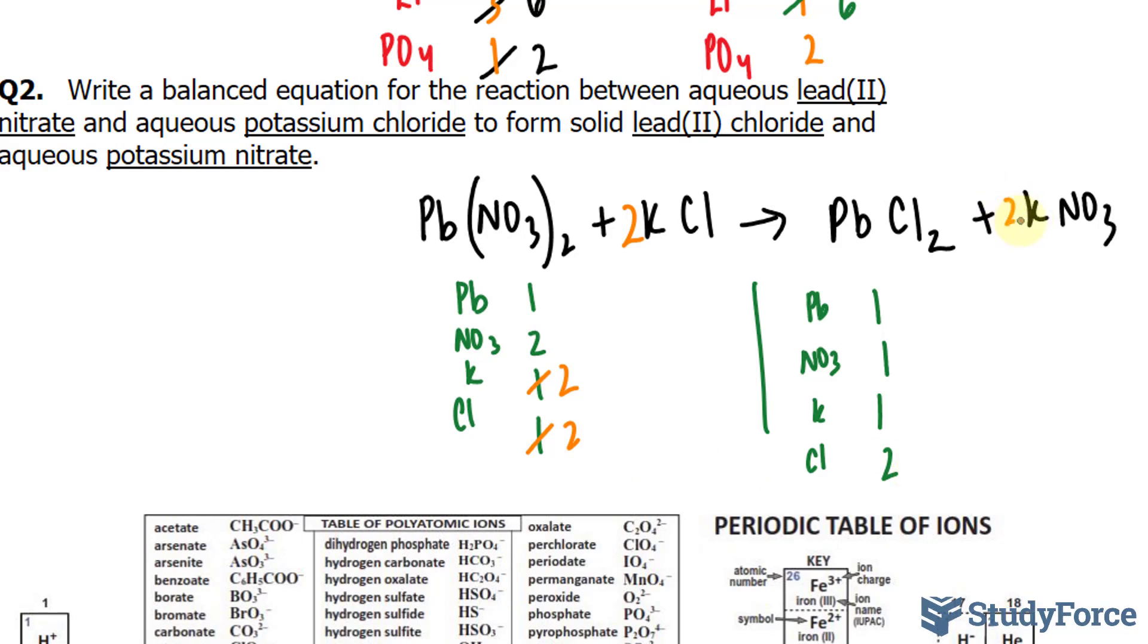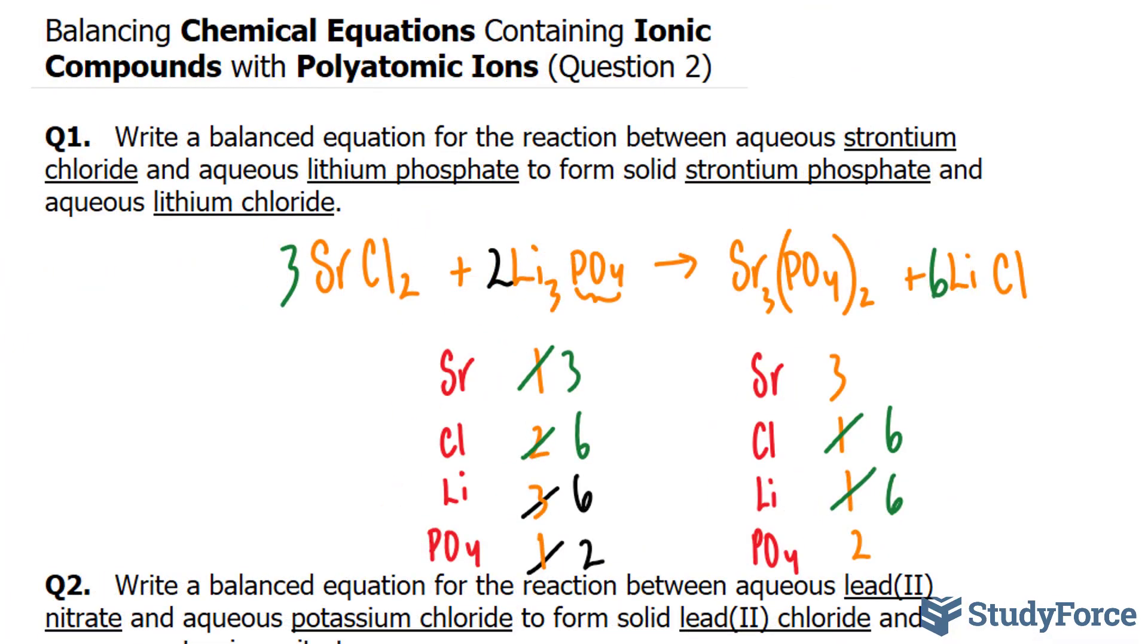However, if I put a 2 over here, I end up with 2 potassiums and 2 nitrates. And that seems to be perfectly balanced. And there you have it. That is how to balance chemical equations containing ionic compounds with polyatomic ions.